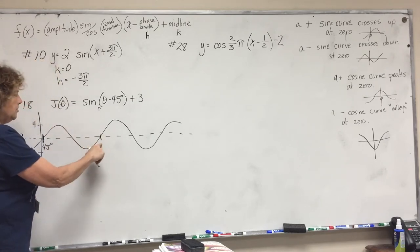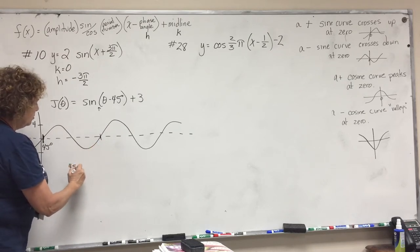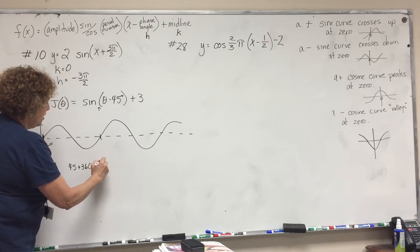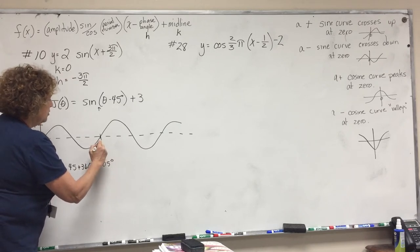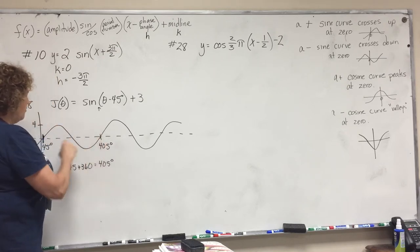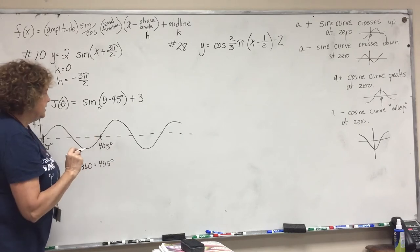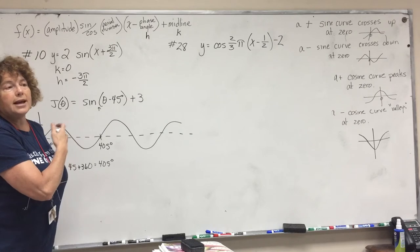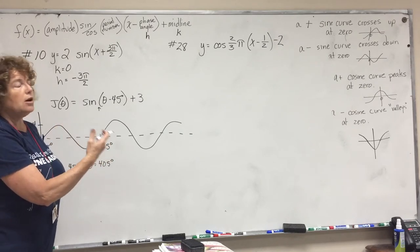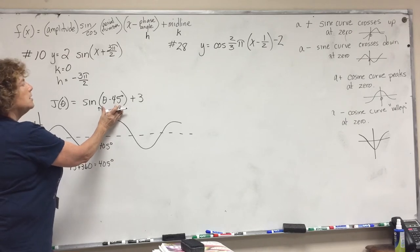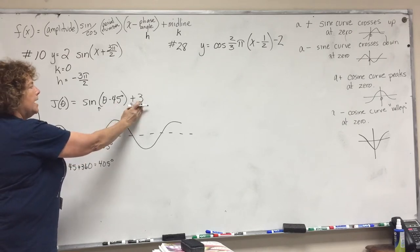So I would say 45 plus 360 degrees equals 405 degrees. So this is 405 degrees, because starting at 45, ending at 405, this is 360. I don't care that the book says graph it from negative 360 to positive 360.